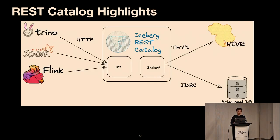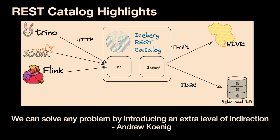That brings us to the REST catalog. The Iceberg REST catalog is a new solution where we delegate catalog responsibility to a REST server. Process engines such as Trino, Spark, and Flink send HTTP requests to the REST endpoint and get their desired response back. This opens many doors of integration on the server side — following the fundamental software engineering principle that we can solve any problem by introducing an additional level of indirection. The REST server hides all implementation details of Iceberg transactions from users.